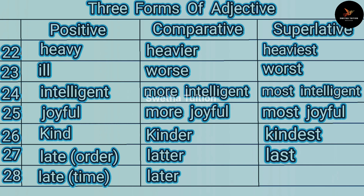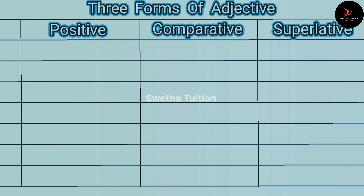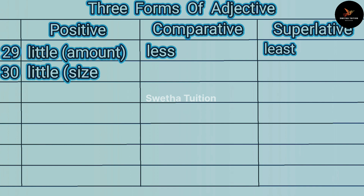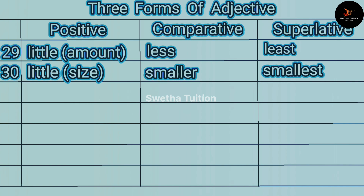Number twenty-eight: late (for time) later, latest. Number twenty-nine: little (for amount) less, least. Number thirty: little (for size) smaller, smallest.